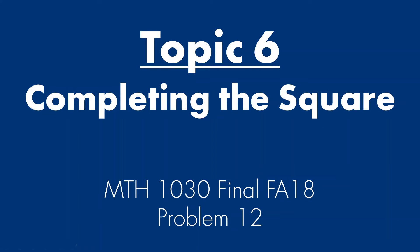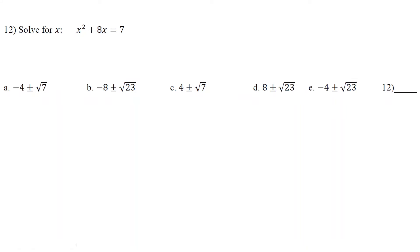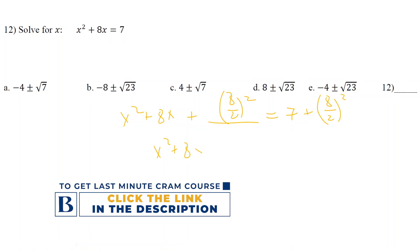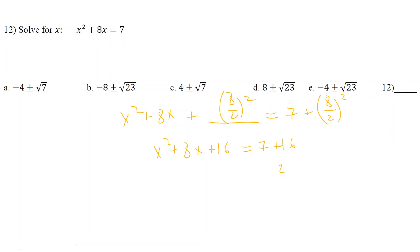Next. Topic 6. Completing the square. FA16 problem 12. What is completing the square? You have x squared plus 8x. Leave the space here equals 7. What is the space? 8 over 2 squared. And we'll go to both sides. 8 over 2 squared. So here we got x squared plus 8x plus 16 equals 7 plus 16. So 23 on the right. Here it's x plus 4 squared.